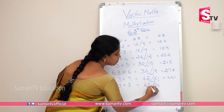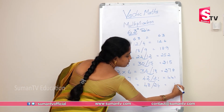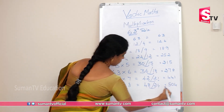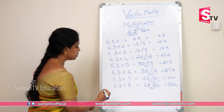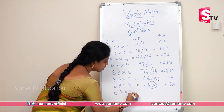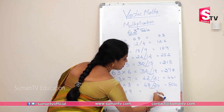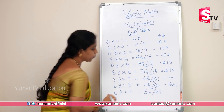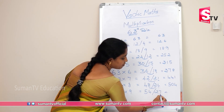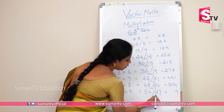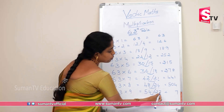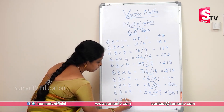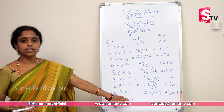Units place: write 1, add 2 with 42 = 44. So 63 into 7 is 441. 63 into 8: 8×3 = 24, 6×8 = 48. Units place write 4, then 48 plus 2 = 50. So 63 into 8 is 504. 63 into 9: 9×3 = 27, 6×9 = 54. Units place write 7, 54 plus 2 = 56. So 63 into 9 is 567. We all know 63 into 10 is 630.